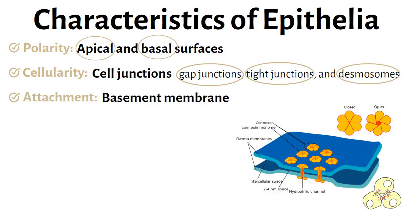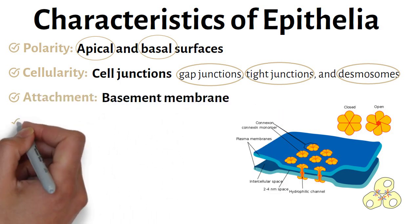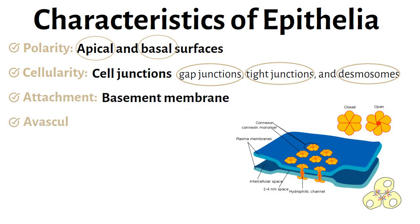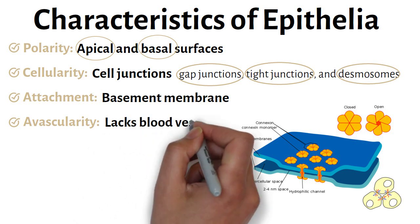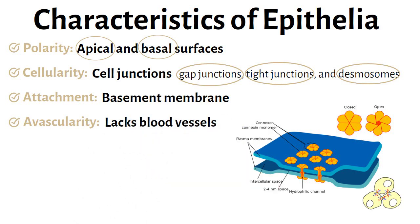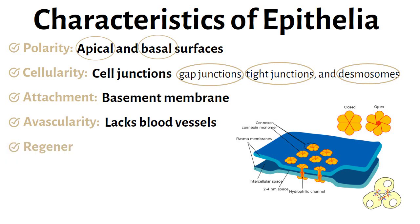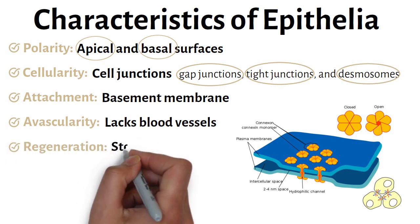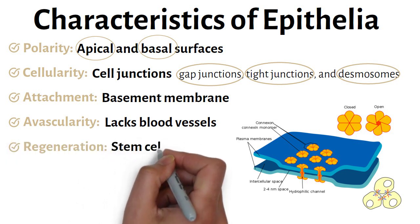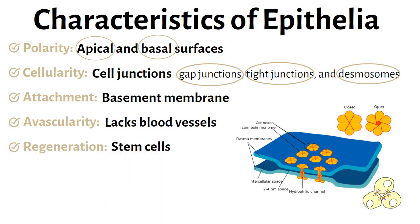Epithelial tissue is characterized as avascular, as the tissue does not contain blood vessels. Lastly, epithelial cells are replaced by continual division of stem cells, which are located near the basement membrane.